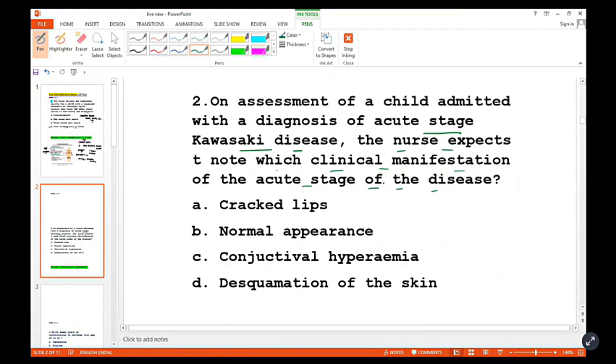In this case there are several stages: subacute, acute, and convalescent stages. The options are: cracked lips, normal appearance, conjunctival hyperemia, and desquamation of the skin. Here is the acute stage of Kawasaki disease.